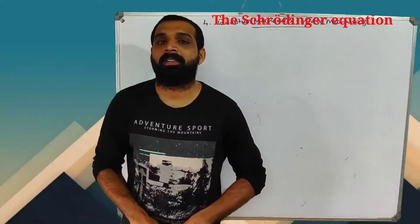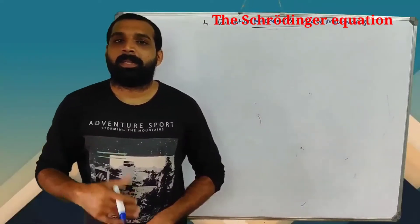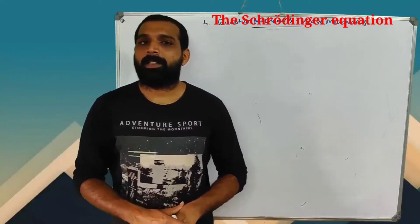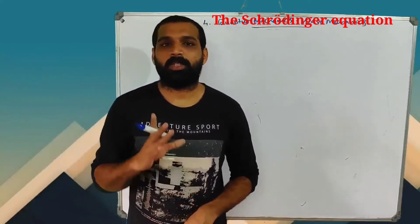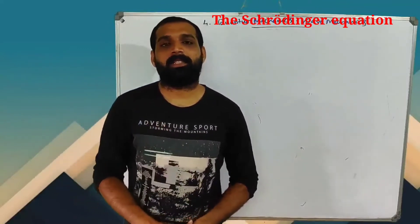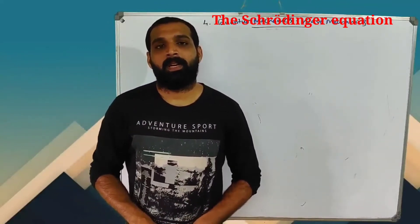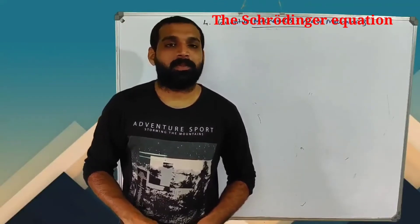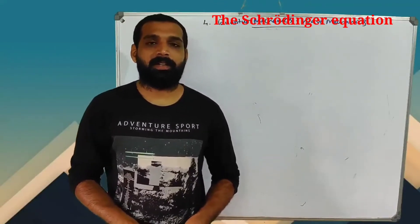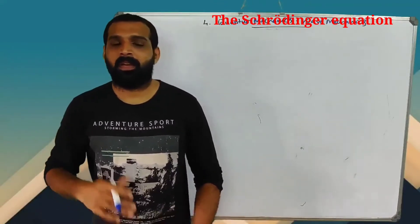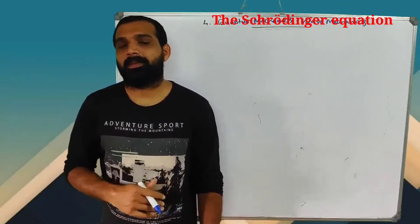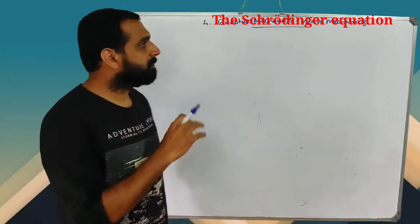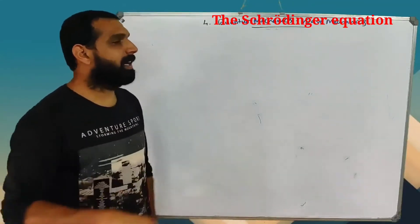Good morning. We have covered three chapters of quantum mechanics. If we want to clear the problems and concepts, then we will go to the fourth chapter. The fourth chapter is Schrödinger's Equation.